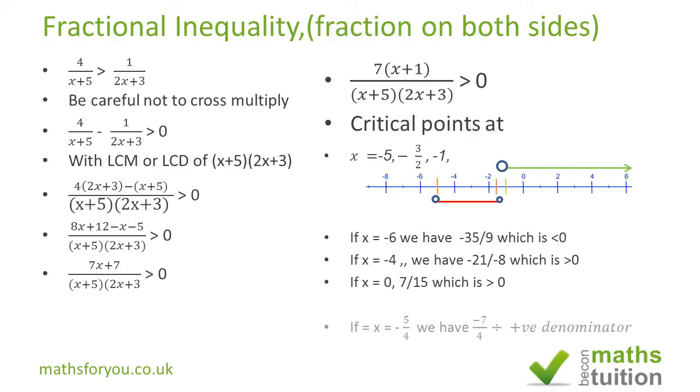And we're going to end up with minus 7 over 4 divided by a positive denominator. That's negative and that's positive. And that's not going to be valid because the value is greater than 0.